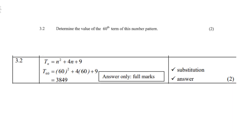Question 3.2: determine the value of the 60th term. Now that b equals 4, the equation is n squared plus 4n plus 9. Substituting n equals 60 gives t60 equals 3,849.